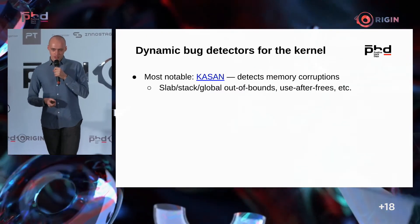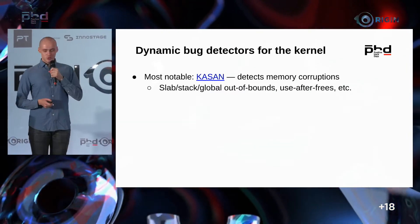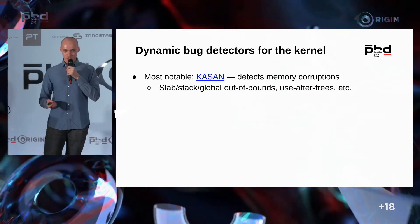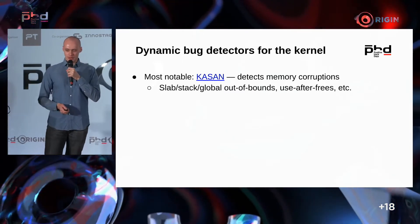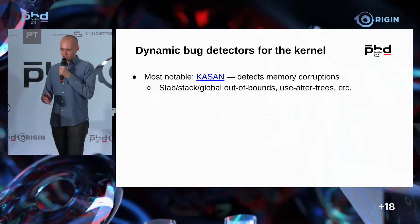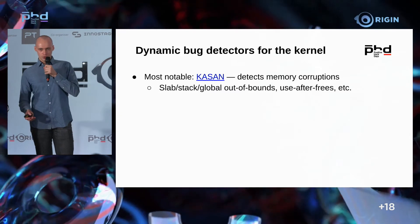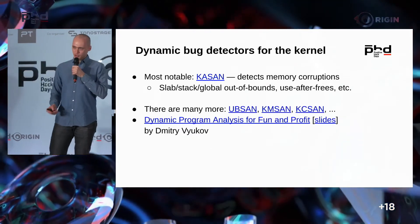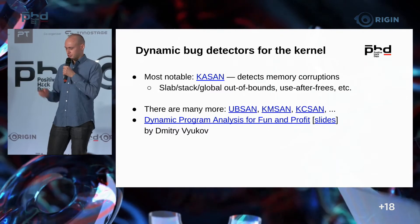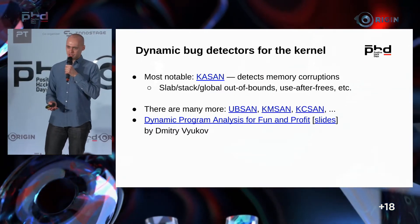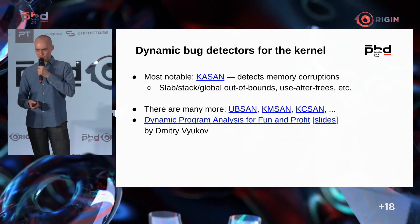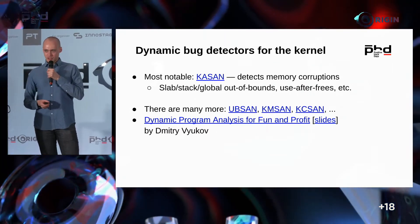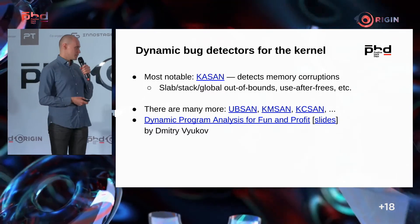For the kernel, there are several such dynamic detectors. The most notable is KSAN, and it's most notable not just because I did work on it, but because it detects memory corruptions. It uses compiler tooling — we just enable a certain config in the kernel and KSAN runs automatically, reporting each memory corruption it discovers. There are also other detectors, all called sanitizers by analogy with user space sanitizers.